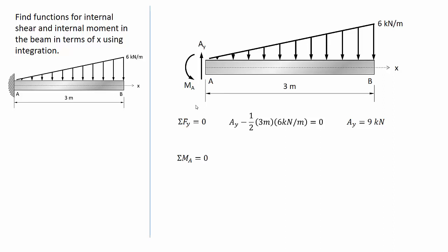Next, I will sum moments at point A. Doing so gives me that the moment reaction MA is equal to 18 kN meters, also in the direction shown.